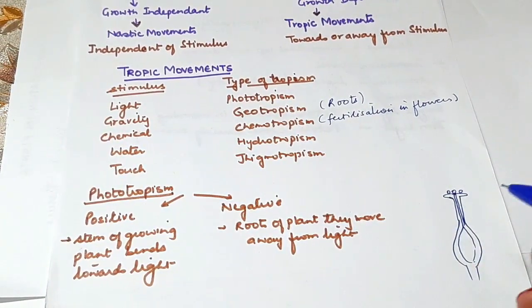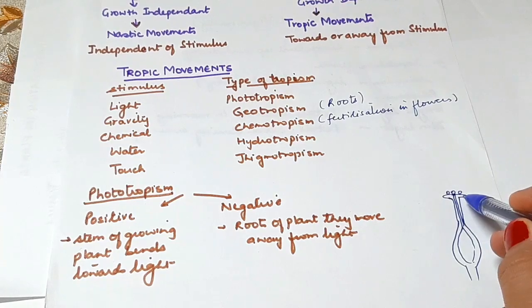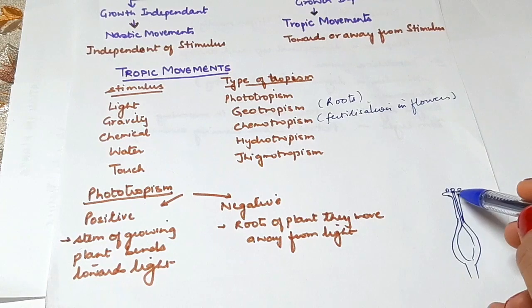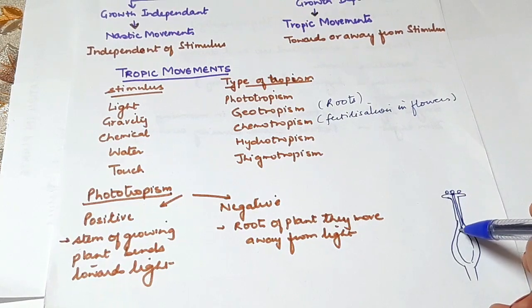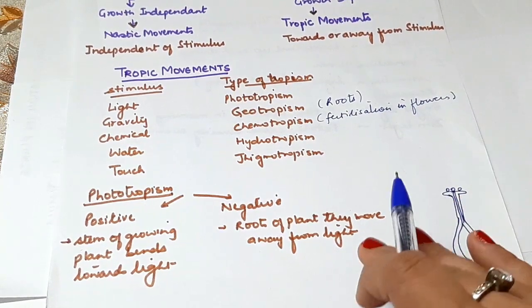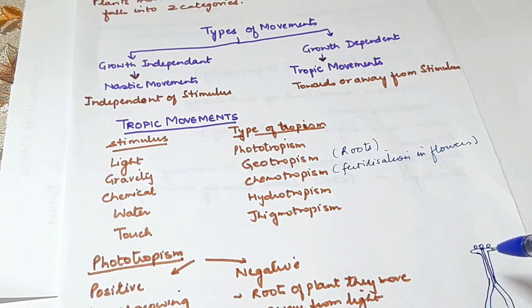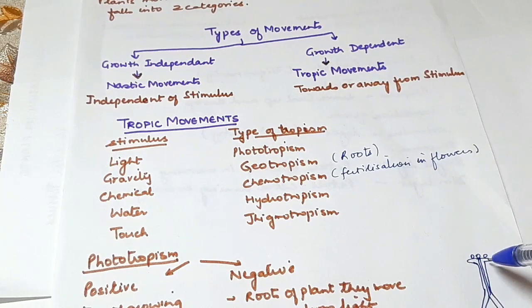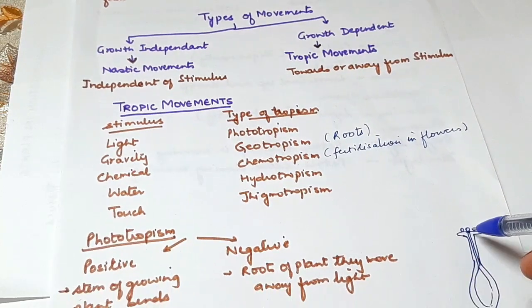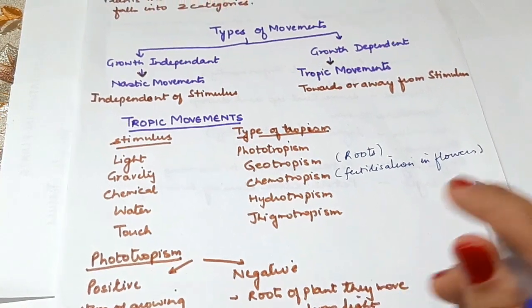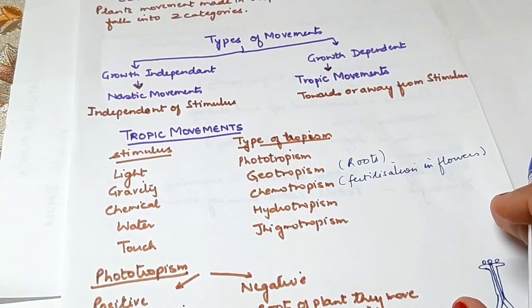For example, in the fertilization process in flowers, pollen grains grow on the stigma. The pollen tube grows towards the ovule. This is an example of positive chemotropism, where the stimulus is the chemical from the ovule, leading to the development of the pollen tube.